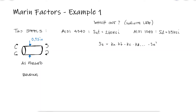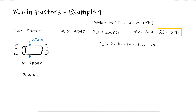For each material, we'll find the Marin factors that apply and the first rough estimate of the endurance limit, SE'. SE' is estimated as half the ultimate strength as long as the ultimate strength is below 200 KSI; otherwise, SE' is assumed to be 100 KSI.